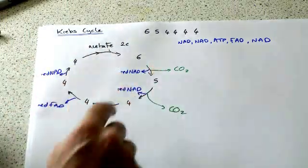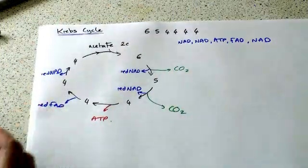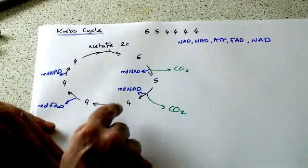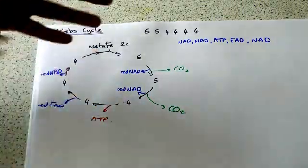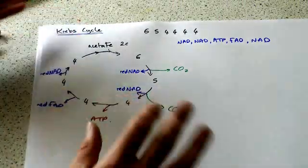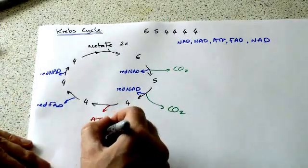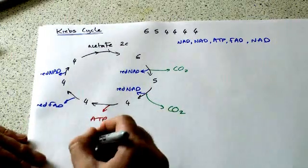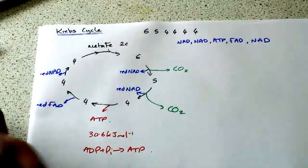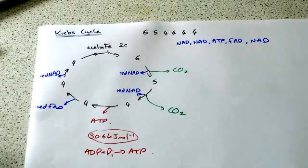FAD does the same role as NAD. It's actually fixed in place, not free to move around, but it does the same thing. It accepts hydrogens, hence it becomes reduced. ATP at this step, you might be thinking, where's this ATP come from? We've gone from four carbons to four carbons, nothing seems to have happened. What this arrow is showing you is a whole series of biochemical reactions that we're missing some of them out. It just so happens at some of these steps, at least 30.6 kilojoules per mole is released, because that's how much energy we need to get ATP from ADP and an inorganic phosphate group. So at some point along here, we've released at least 30.6 kilojoules of energy, and it was enough to make ATP.